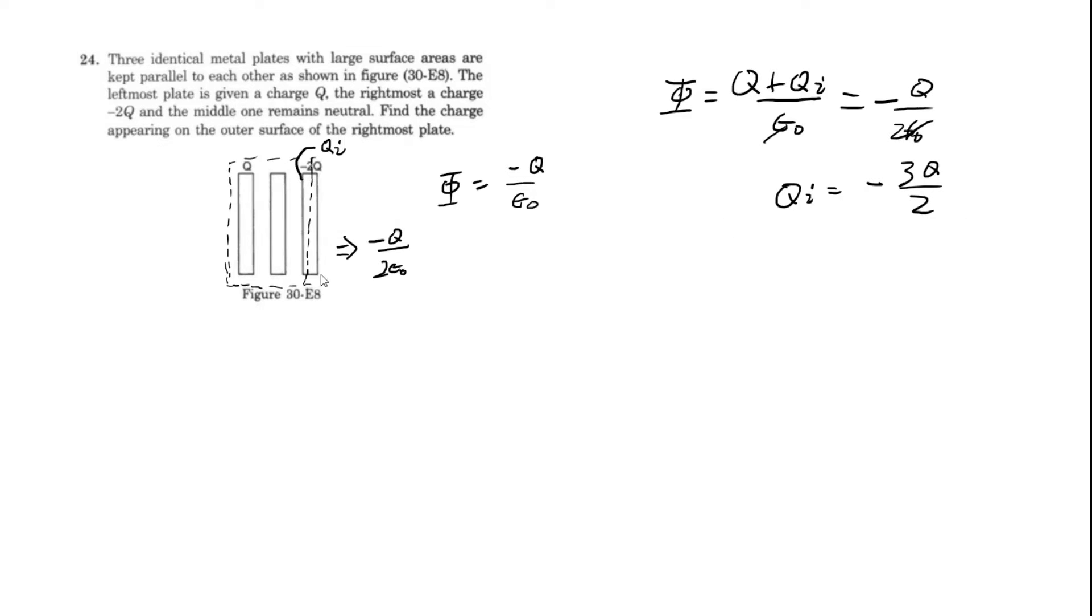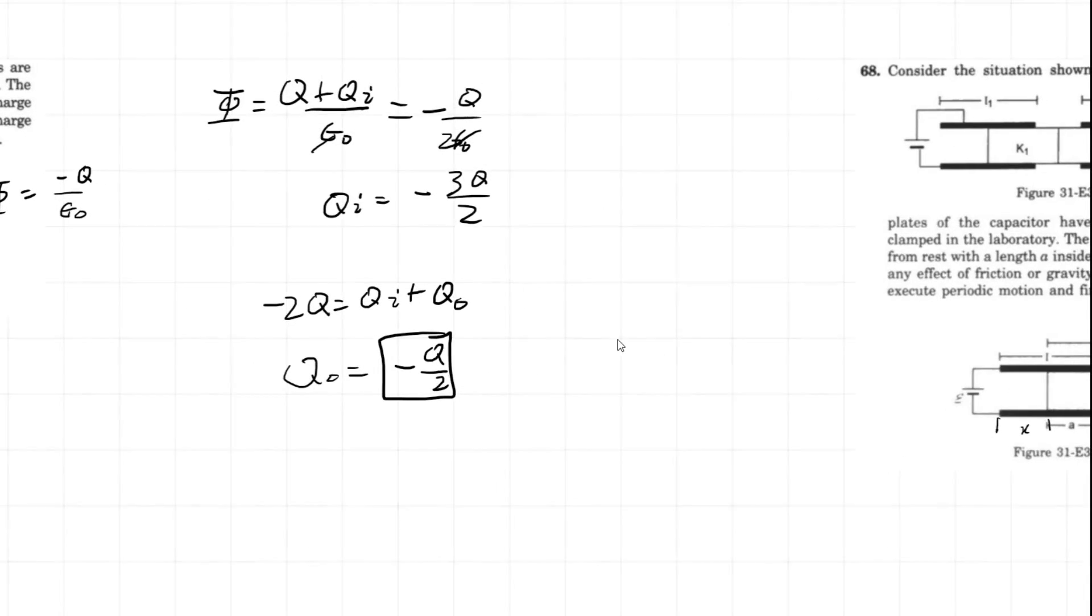And we know, we also know the total charge on this plate here is negative 2 Q is equal to Q sub i plus Q sub o. Outside charge, which is what we want. And it's pulling our numbers in. And this gives us Q sub o is equal to negative Q over 2. Alright, so that problem was also pretty simple. And let's move on to the last one, which is a little bit more involved.